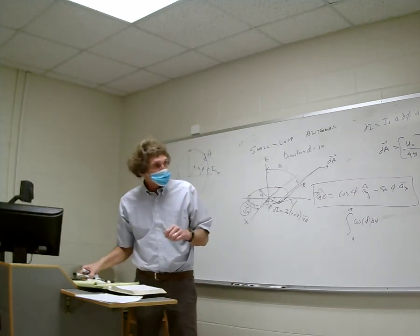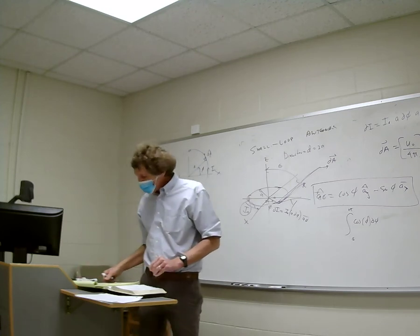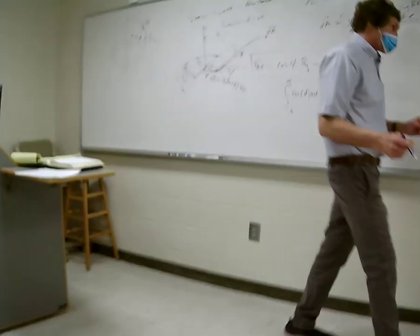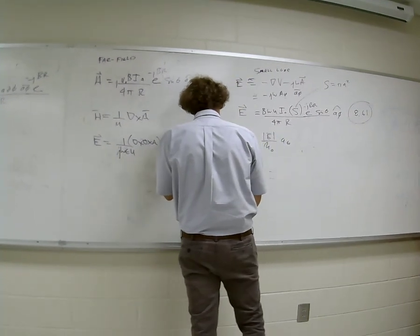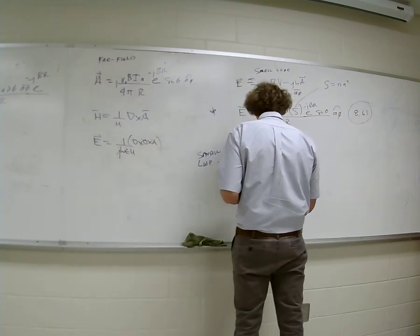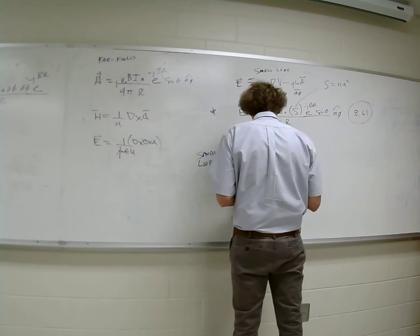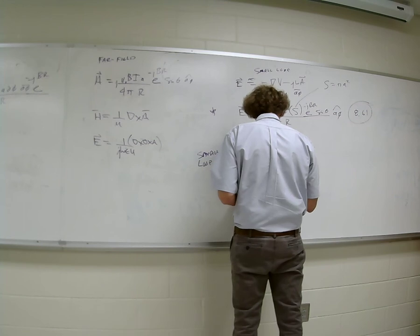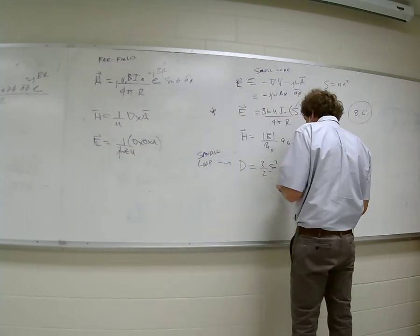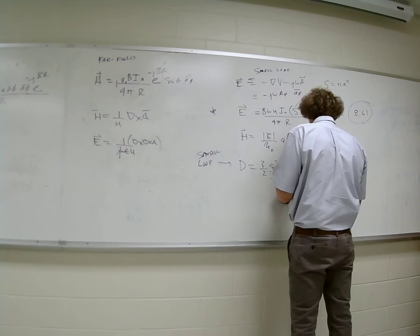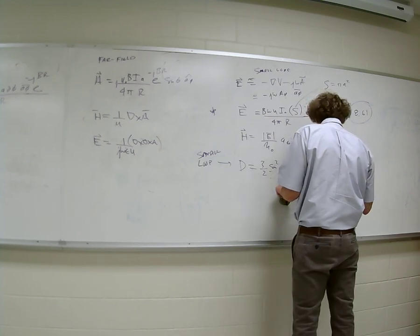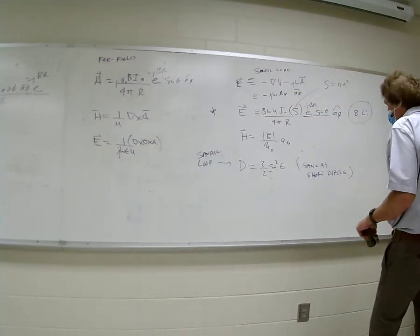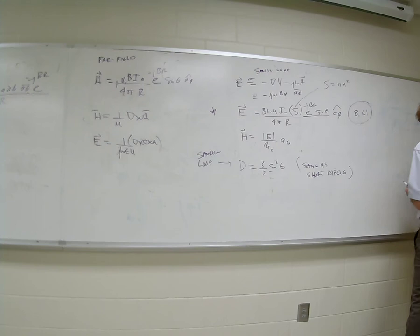The key thing with the small loop is the radiation resistance. In his book, the directivity for the small loop is 1.5 times sine²(θ) — same as the short dipole. The big difference is the E field is in a different direction. The radiation resistance is what gives it away.